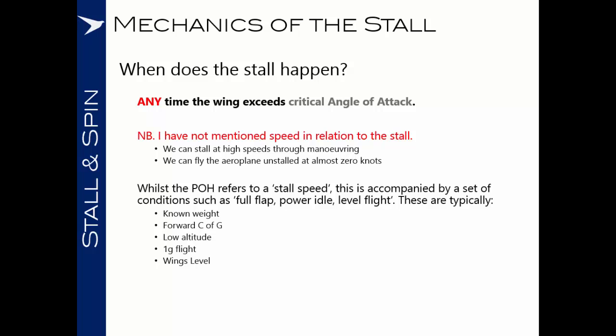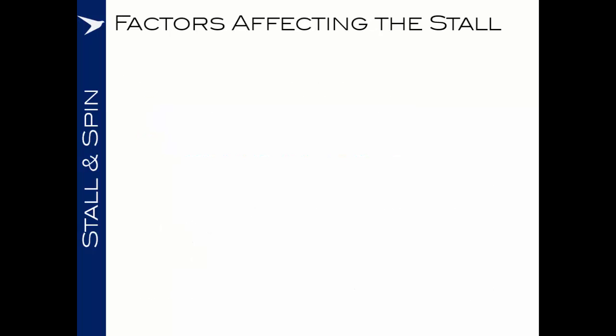The pilots operating handbook or flight manual probably does refer to a stall speed, and often we talk about it in flight. However, this is accompanied by a well-documented set of conditions. A POH might say something like: conducted at maximum all-up weight, full flap, power idle, wings level. The stall speed is typically quoted at a known weight, forward CG, low altitude, in one-G flight, with wings level.